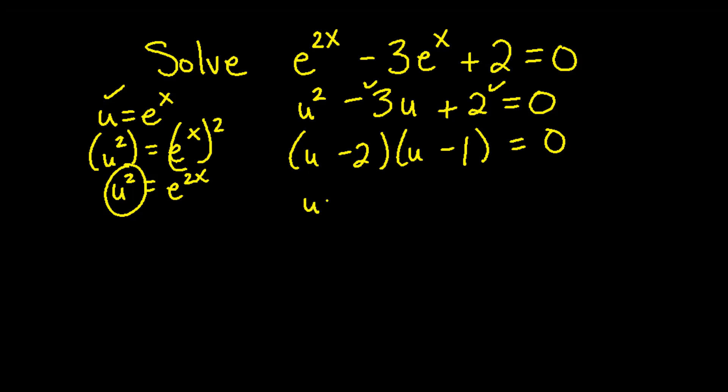Setting both of these equal to 0 we can solve for u. u equals 2 and u equals 1. At this point we want to change u back to what it equals which was e to the x. Now keep in mind we're trying to solve this problem for x not e to the x.